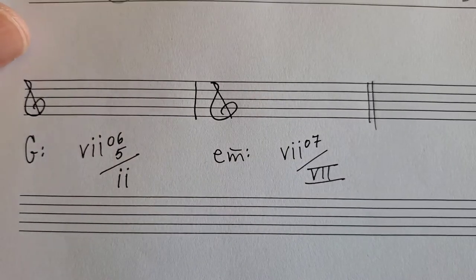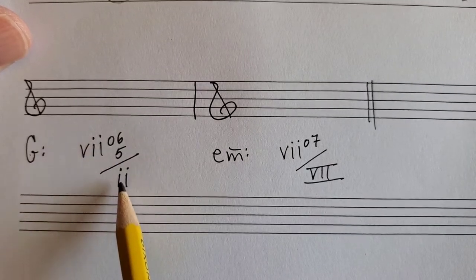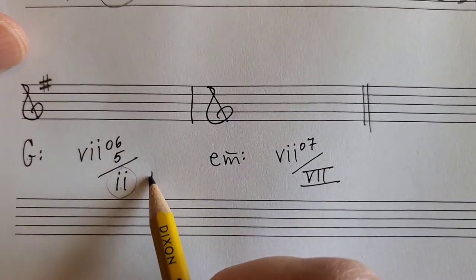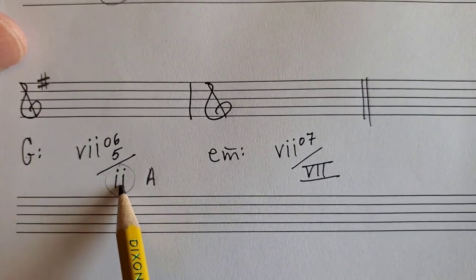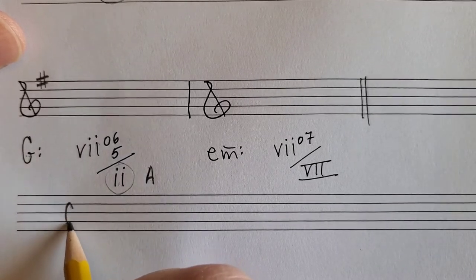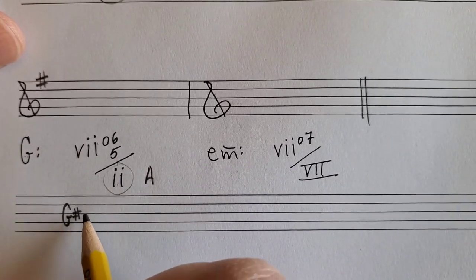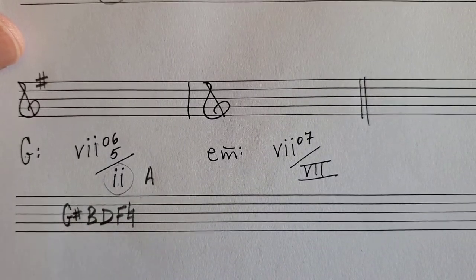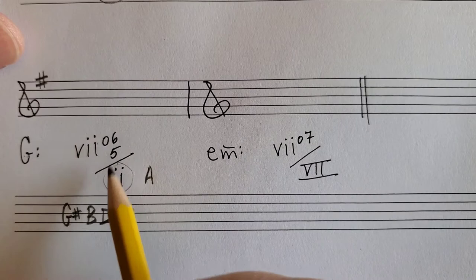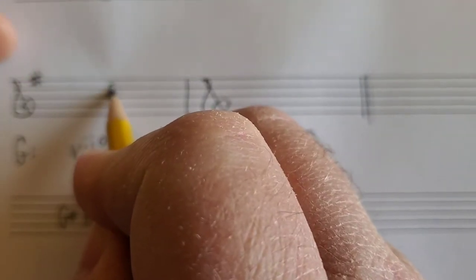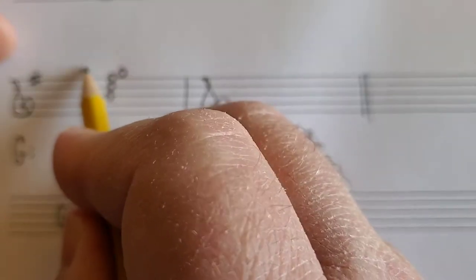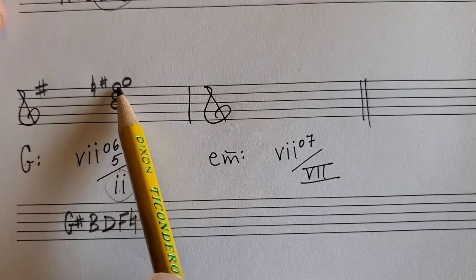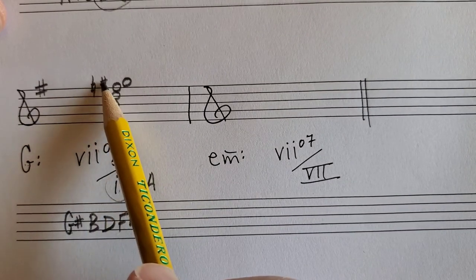G major, viio6/5/ii. Write the key signature. II in G major is A — it's A minor. The leading tone of A is G#. Spell the fully diminished seventh chord: G#, B, D, F natural. Notice F natural and G# are both outside the key signature. 6/5 position means put B in the bass. Both F natural and G# have to be marked in. Note how the accidentals are placed — the one farther left applies to the note to the left, and the closer one applies to the note on the right.